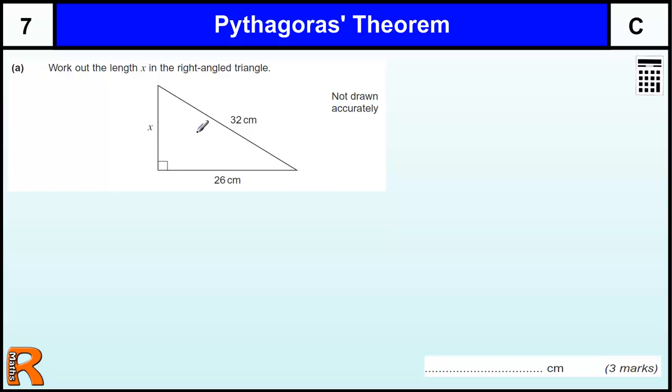When you've got a right angle triangle and you've just got a missing side and two other sides, there's no angles involved, then it's not trigonometry, it's just Pythagoras' theorem, which tells you that the square of the hypotenuse is equal to the sum of the squares of the other two sides.